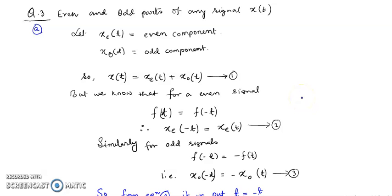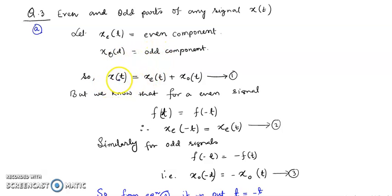To find the even and odd parts of any signal X(t), we consider Xe(t) as its even part and Xo(t) as its odd part. Then we can write the signal X(t) as a sum of its even and odd parts: X(t) = Xe(t) + Xo(t), as given in equation 1.